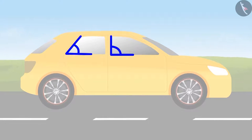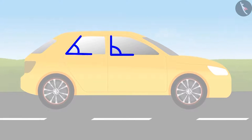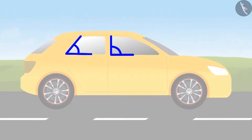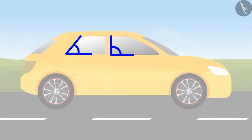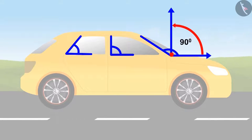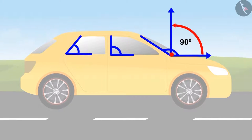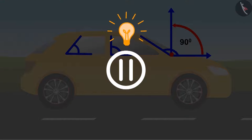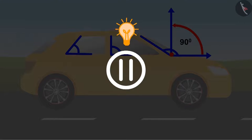Back at the car, in the front window Dholu can see an angle equal to a right angle. Between the front part of the car and the front windshield, there is an angle larger than a right angle. Children are invited to pause the video and try to find more angles.